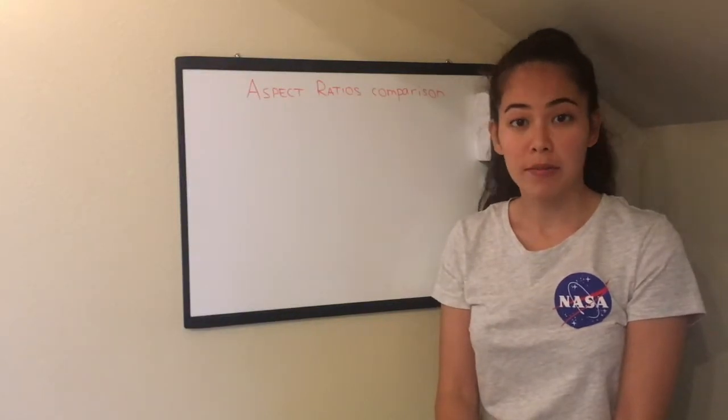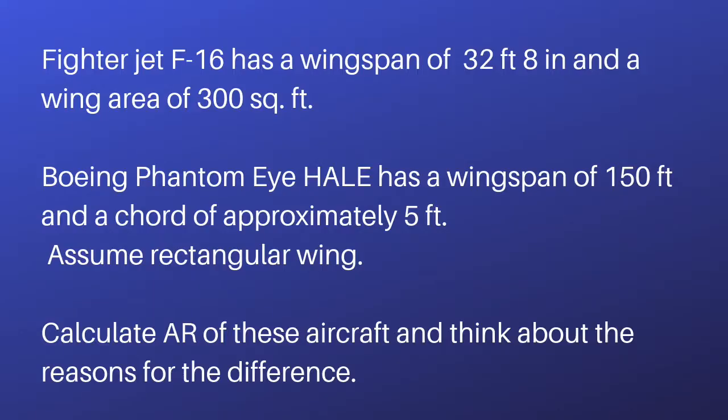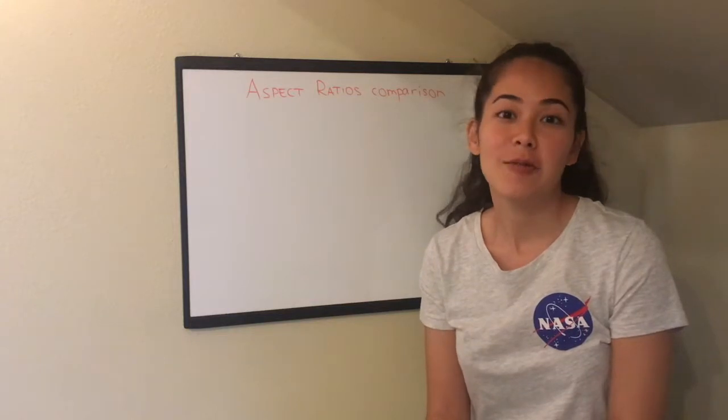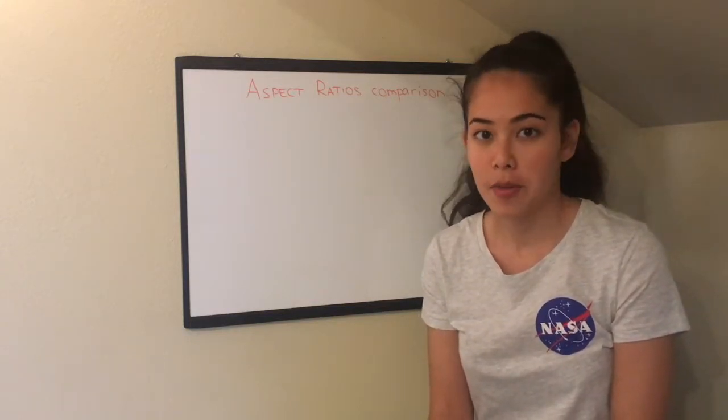So here's our problem statement. Fighter jet F-16 has a wingspan of 32 feet and 8 inches and a wing area of 300 square feet. You might ask, where do I find these parameters? Usually Wikipedia has the correct numbers.